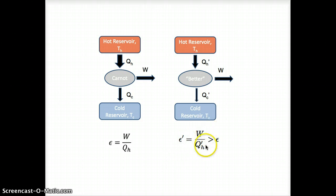This would mean that the efficiency of our better engine, W divided by QH prime, is greater than the efficiency of our Carnot engine. So the claim in textbooks and in class is that this is impossible. We can't get a heat engine with an efficiency, epsilon prime, greater than the efficiency of the Carnot engine. And so let's see if we imagine this better heat engine exists, let's see what kind of kooky things happen.